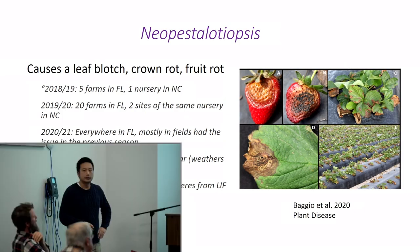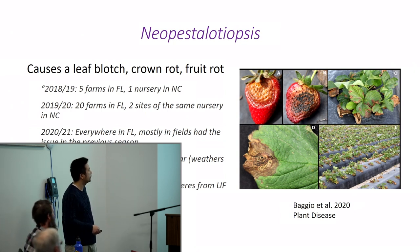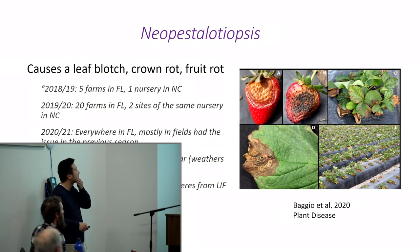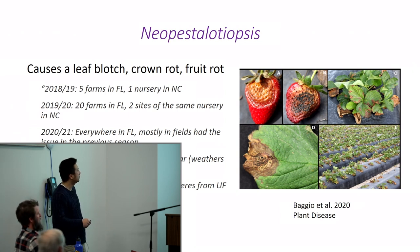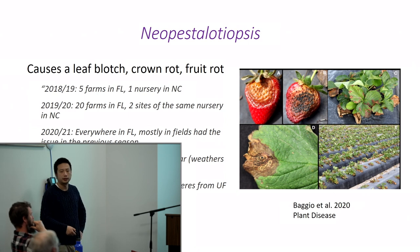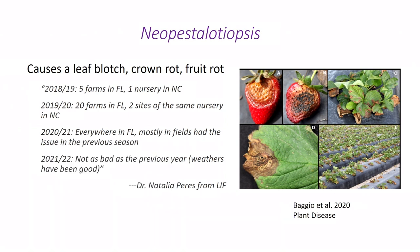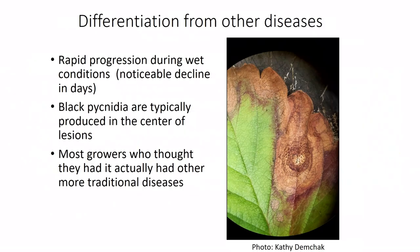Moving on to Neopestalotiopsis — this is a relatively new disease that caused major issues in Florida. My colleague Dr. Natalia Peres at the University of Florida mentioned that in the 2018-19 season, five farms had the issue and all got transplants from one specific nursery in North Carolina. The second year, 20 farms in Florida all got plants from two sites but still from the same nursery in North Carolina. It got worse the following year. It's similar to anthracnose — it infects fruit and can also cause crown rot. It's a very devastating disease in Florida.